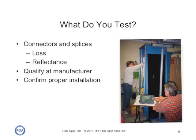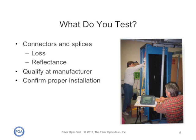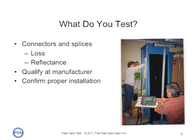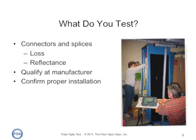For connectors and splices, we're interested in the loss — the light lost at the connector. And mostly for connectors, we're interested in reflectance, the amount of light that gets reflected back toward the source, because that can be a problem in high-bit rate systems. Connectors and splices are qualified at the manufacturer, who will terminate many cables with their connectors to see what the average loss is when terminated in typical fashion. But the end-user putting these connectors on their cable plant will be testing in the field to confirm proper installation.